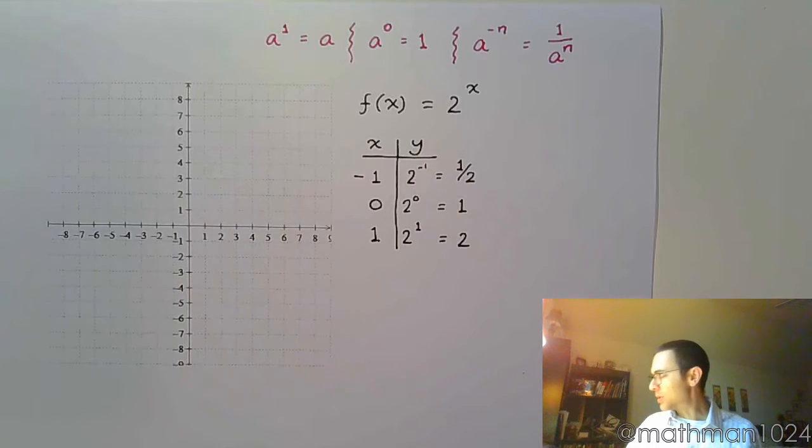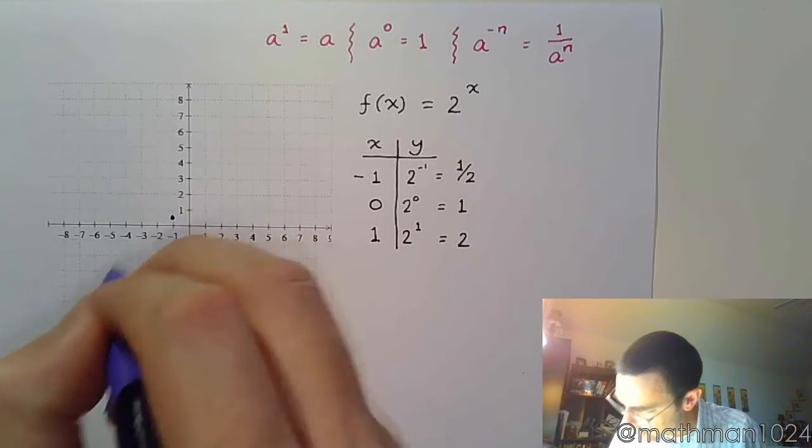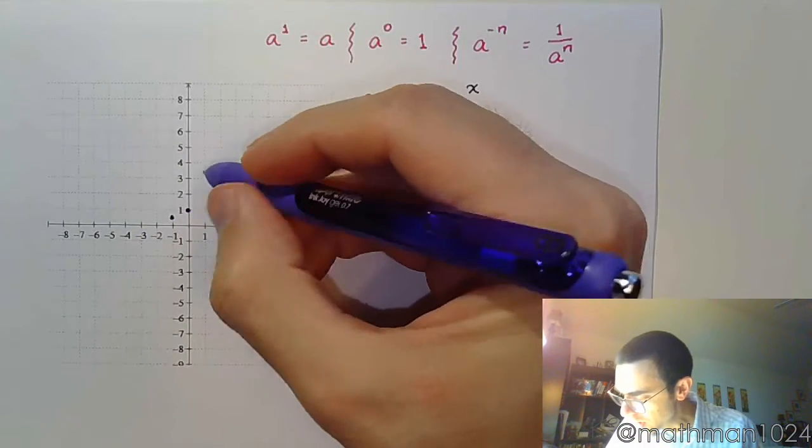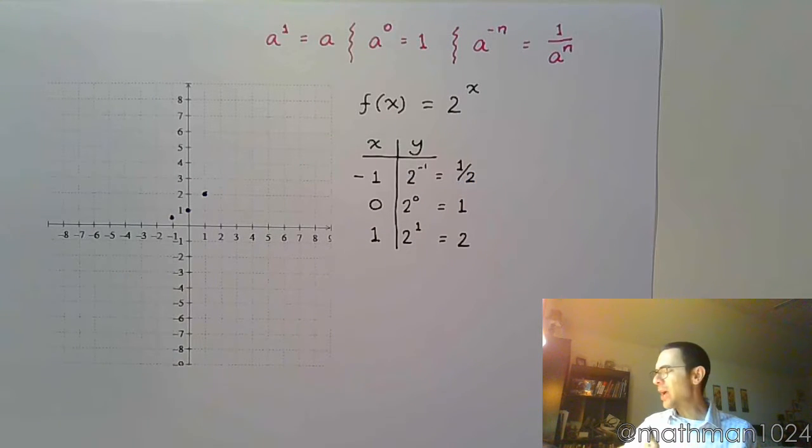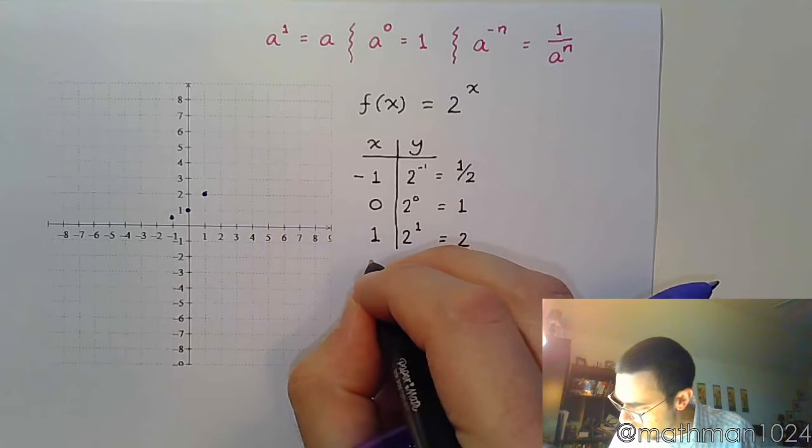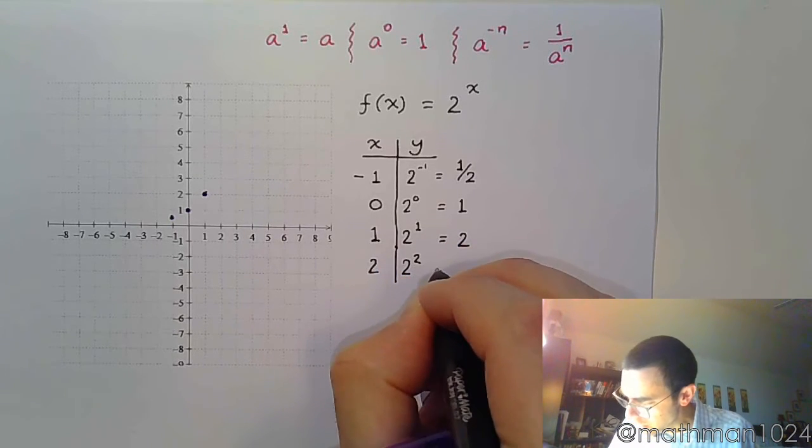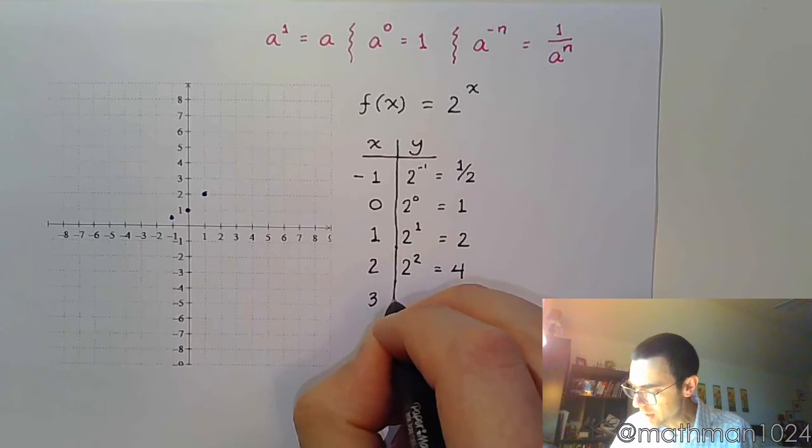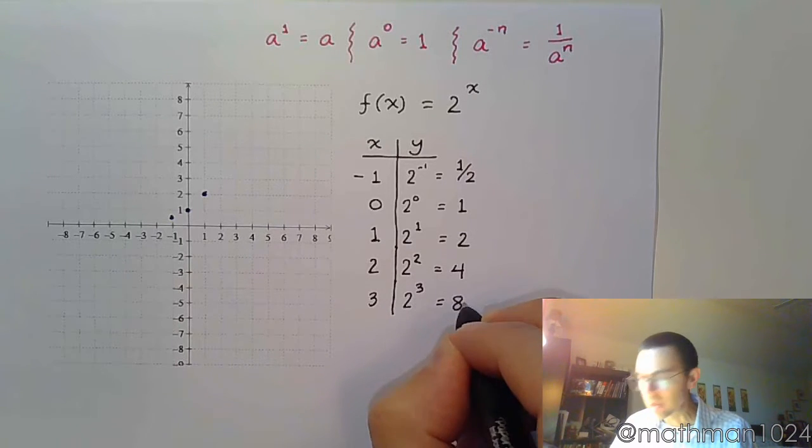Now, I can take these points and plot them. You can see maybe there's going to be a pattern. So -1 gives me positive 1/2. 0 gives me 1. Plug in 1 and I get 2. What if I plugged in 2? I just want to see what happens if we keep going. If I plug in 2, we get 2 squared, which equals 4. If I plug in 3, 2 to the third, which equals 8.